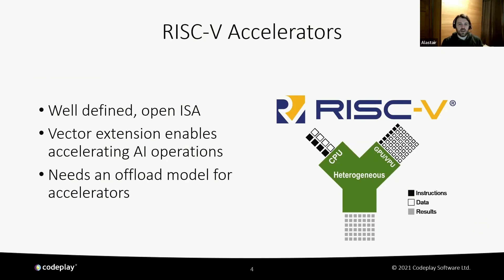RISC-V is a well-defined open ISA, and there is already a collaboration around creating tooling for it. It's gaining huge momentum with CPUs, but increasingly there are companies developing accelerator processors based on RISC-V. In the accelerator space, vector extensions are a strong choice for providing high performance, dense compute for the data parallel workloads found in AI. It provides a range of scalable vector operations which map well to accelerated programming models, as those are already designed to target arbitrary levels of data parallelism.